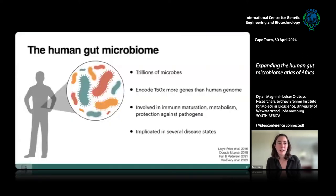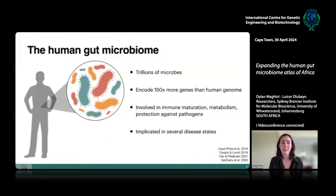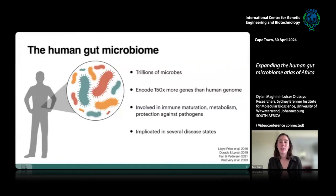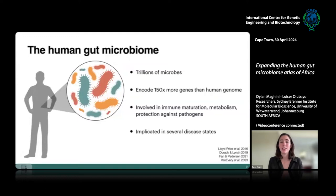The human gut microbiome, as many of you are aware, is this complex community of trillions of microorganisms that all coexist in our gut. This is predominantly comprised of bacteria and viruses, but also includes archaea and fungi. Collectively, these microbes encode over 100 times more genes than we encode in our genome, and are involved in functions related to health and disease, including immune maturation, metabolism, and protecting us against pathogens.